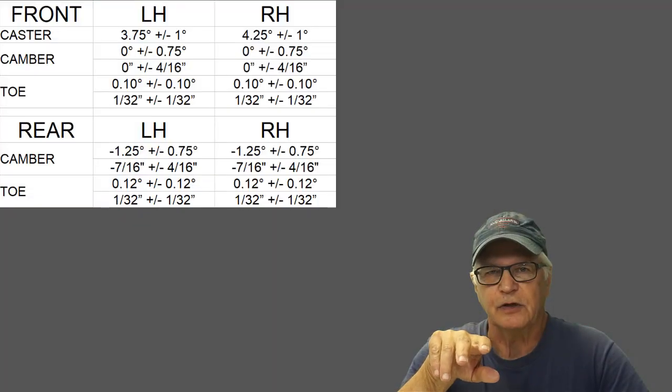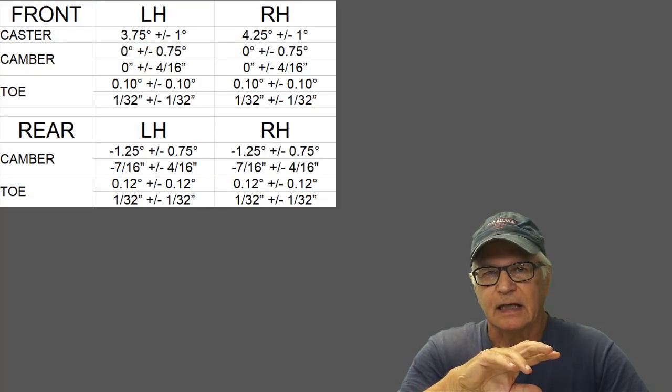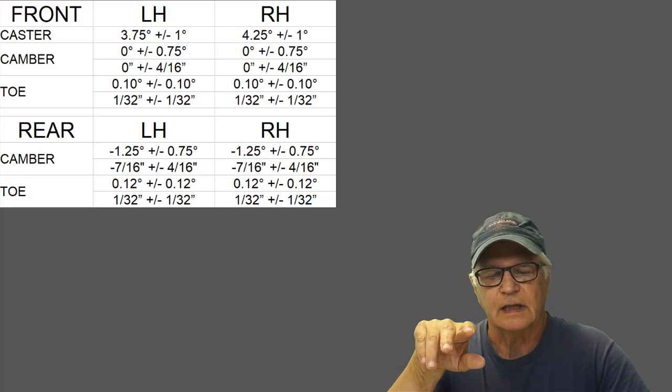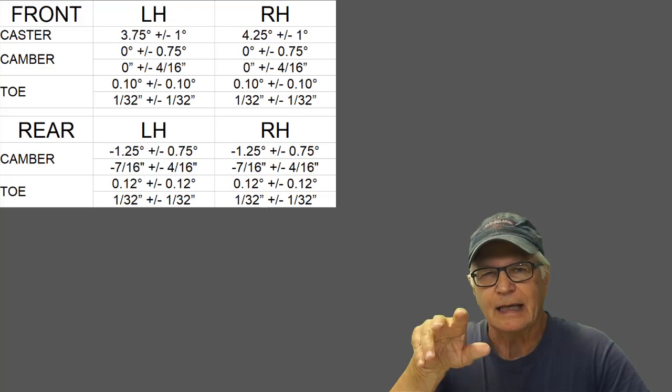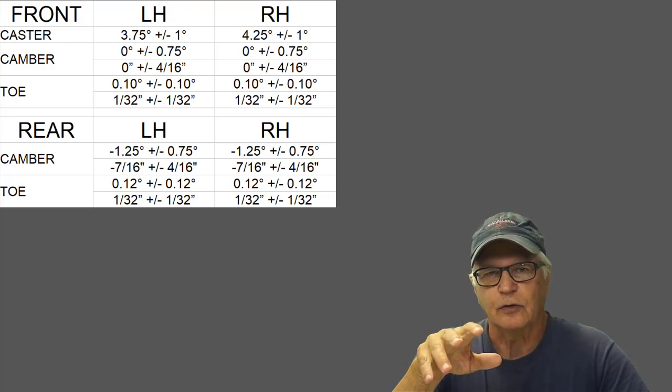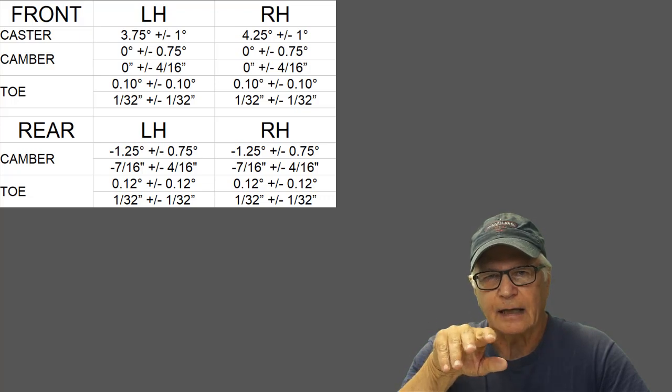The same measurement procedure now can be carried out on the left-hand side of the vehicle. Notice that the manufacturer built in a half a degree difference between the right-hand and the left-hand specifications. That's called cross caster. The anticipation is that the vehicle will be driven on the right-hand side of a crowned road, and this will help the vehicle track under that condition.